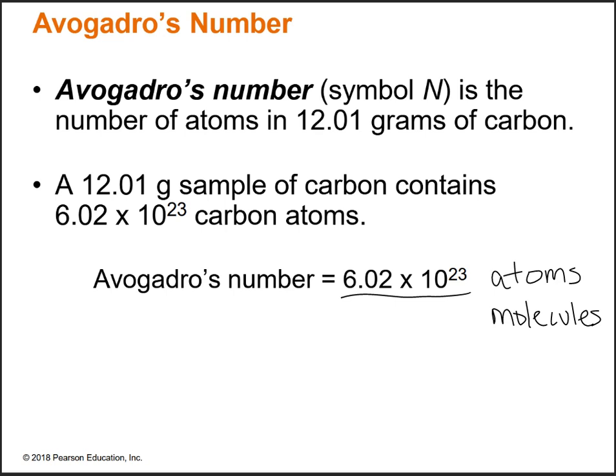So if we had a sample of carbon and it weighed 12.01 grams, it would contain 6.02 times 10 to the 23rd carbon atoms. By the end of this lecture, you'll be able to understand what that statement means. Come back to this first slide at the end, and if that makes sense to you, then Chapter 8 makes sense to you.